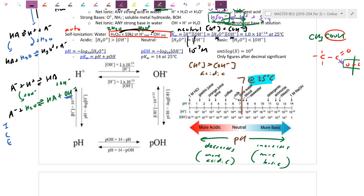pH is put on a log scale because numbers get super tiny. pH is defined as the negative log of H+, while pOH is the negative log of hydroxide. If you have 'p' anything, it's just the negative log of that thing. pH is just a ruler watching the H+ concentration.